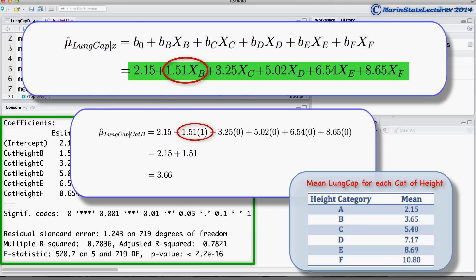For someone in category B, we would have their estimated mean lung capacity equal to 2.15 plus 1.51 times 1. Here we have the xB indicator equal to 1 because the individual is in category B, plus 3.25 times 0. The xC indicator is equal to 0 as this individual is not in category C, and so on. All other x indicators equal to 0.